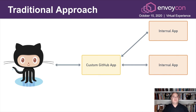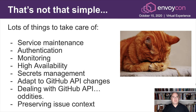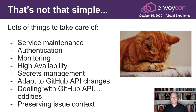Also, this is not really appropriate for a lot of open-source projects that don't always have the appropriate resources to deploy and develop such a thing. There are some custom applications out in the wild, but combining them all together is a bit problematic. When doing such an approach, there are a lot of things to take care of, like maintaining the actual service, authentication, monitoring, high availability, secret management, adapting to GitHub API changes, dealing with GitHub API oddities which mostly concern ordering of events, and also preserving issue context — meaning sometimes you want to have some kind of store that contains state regarding your PR that you cannot maintain elsewhere.